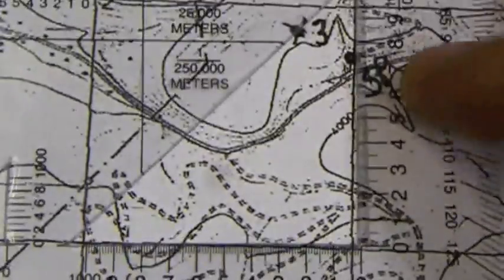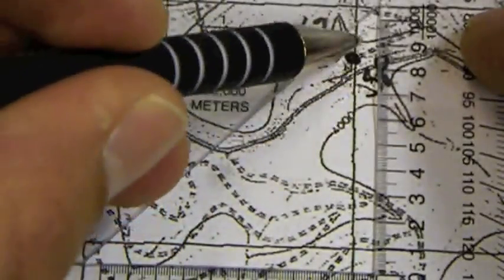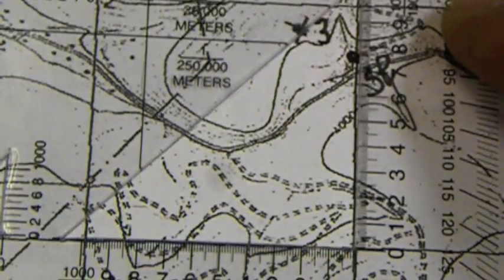Now we've found our grid square. We've got to find our point inside of the grid square. We're going to first line up using this line here, which is 76.